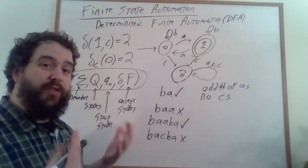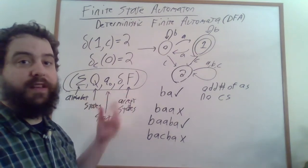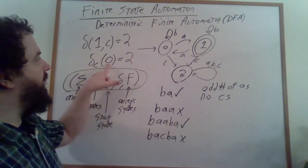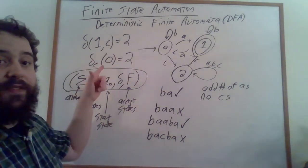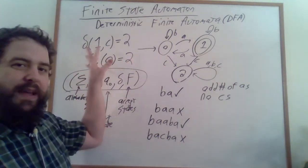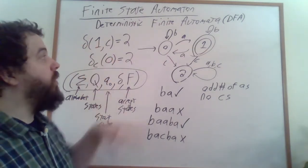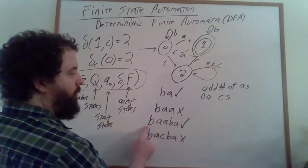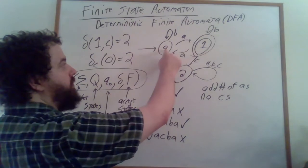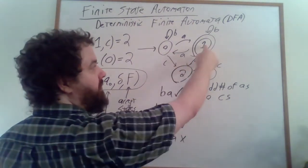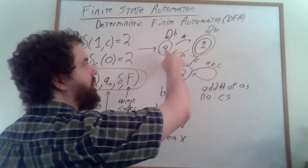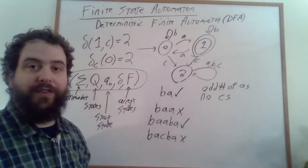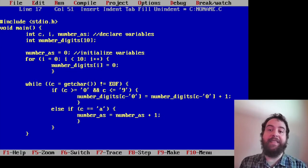So we've already seen two different perspectives for thinking about regular languages and deterministic finite state automata. We can think about them in terms of a collection of functions from the set of states to itself — one function for each input character — so we have this collection of functions and we can reason about finite state automata and regular languages in terms of those. We can also think about finite state automata in terms of paths through a graph: every accepting word corresponds to a path between the start state and one of our final states, so we're talking about paths through this graph going from here to here.